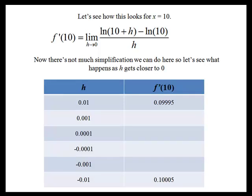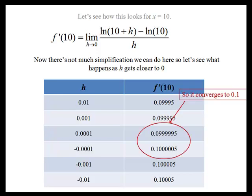So here's our table, and as we get closer to 0, notice that the f prime of 10 values are converging on 0.1 or 1 tenth.